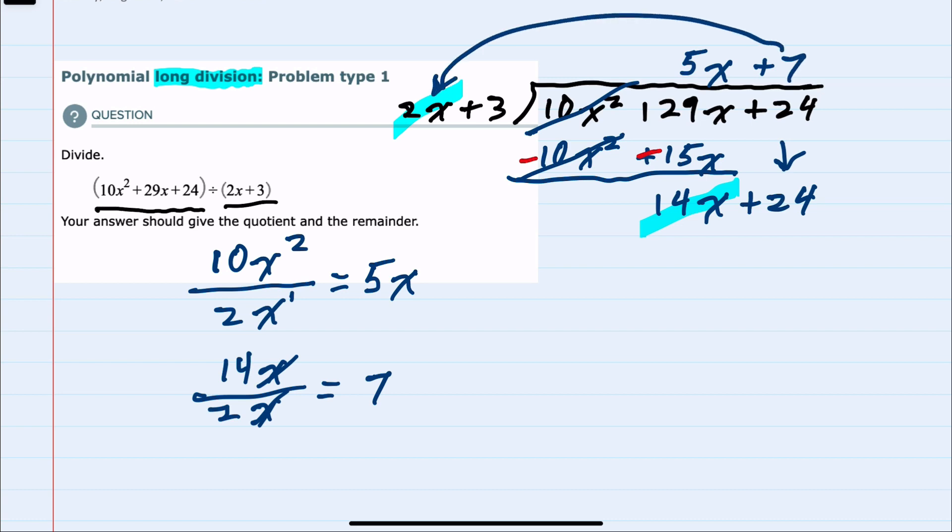And again, I would multiply by that term. 7 times 2x is 14x. 7 times 3 is 21. And from here again, we would subtract. Subtracting, I will change both of these signs and add. And here again, by design, the first terms cancel. 24 plus negative 21 is 3.